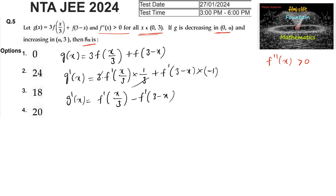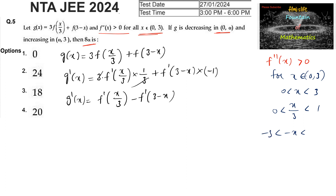Now, f''(x) > 0 for x in (0, 3), meaning f' is increasing. Here x lies between 0 and 3, x/3 lies between 0 and 1, and 3-x lies between 0 and 3. We can observe that x/3 is smaller than 3-x.